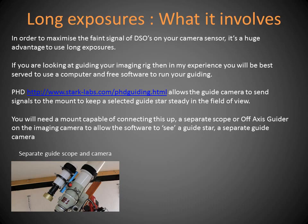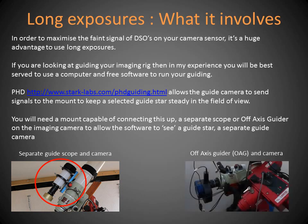This is my refractor with a separate guide scope connected to the top, which has its own camera at the back. Cables run from the guide camera via the computer to the mount, saying 'please move this amount to keep the guide star in the right place.' The other option is an off-axis guider, used more often for much longer focal lengths. You can see it here on the refractor — there's a separate camera sticking upwards, connected again via the computer to the mount to move by a precise number of pixels.